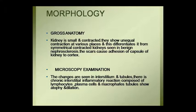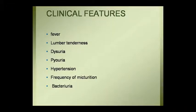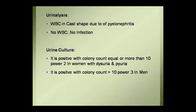On gross anatomy, the kidney is small, contracted, and shows unequal contraction. Benign nephrosclerosis may be seen. Microscopically, the interstitium and tubules show inflammatory infiltrates with lymphocytes, plasma cells, and macrophages, along with tubular dilation. Hypertension is a clinical feature. Urine analysis in pyelonephritis may show WBC casts. Urine culture and colony counts are used for diagnosis.